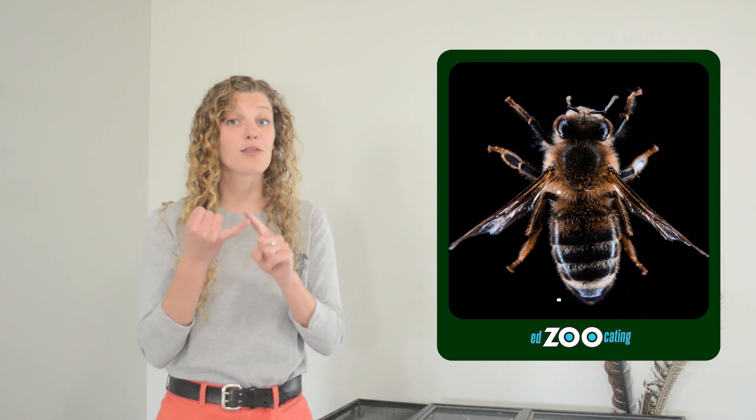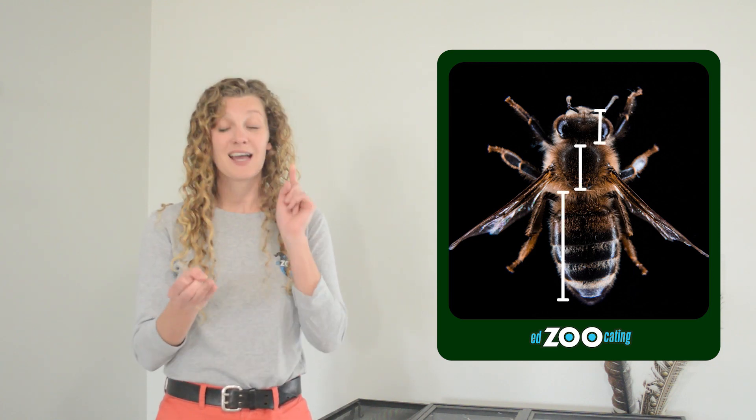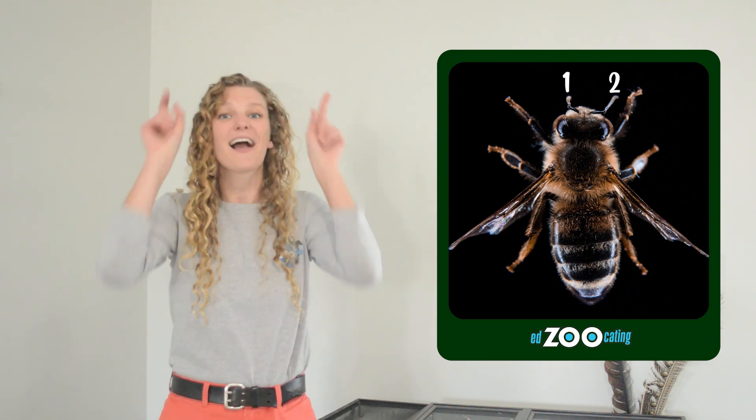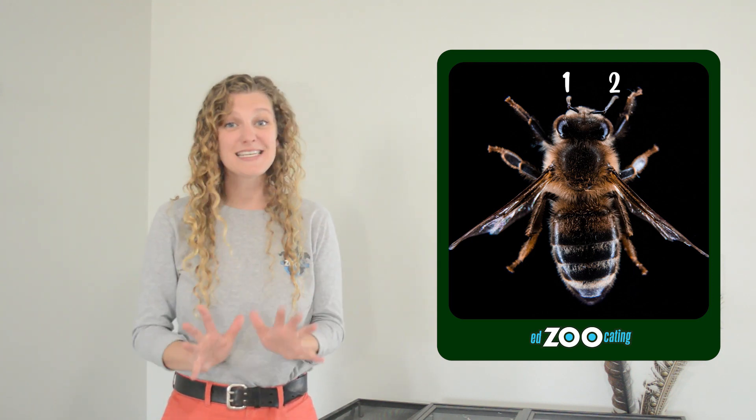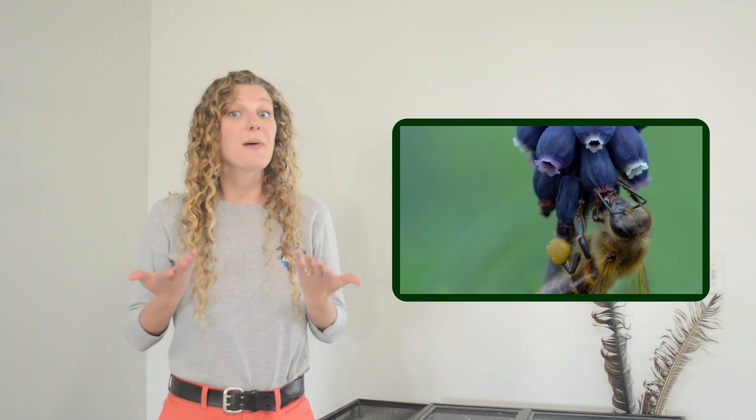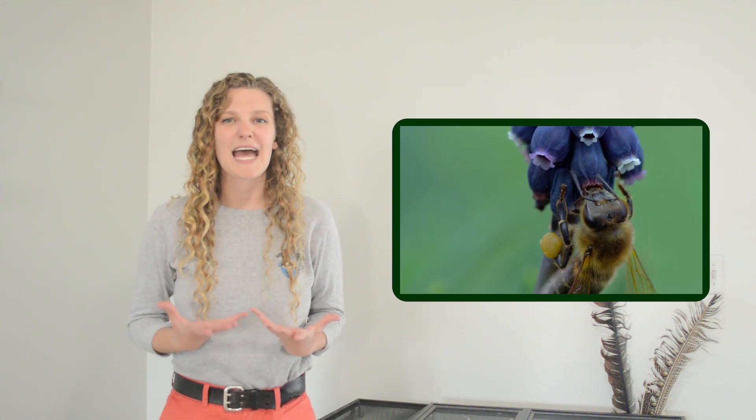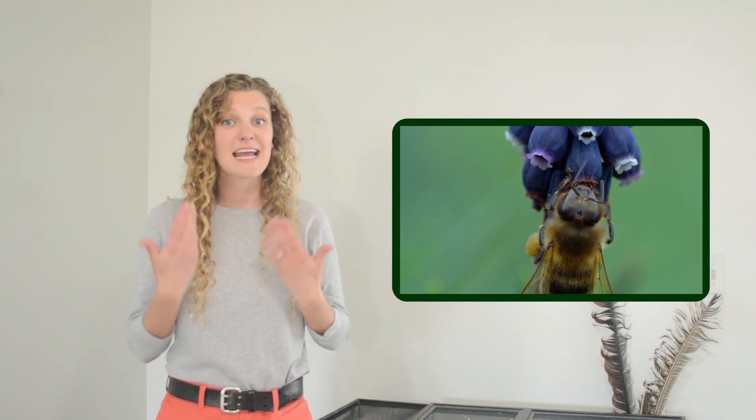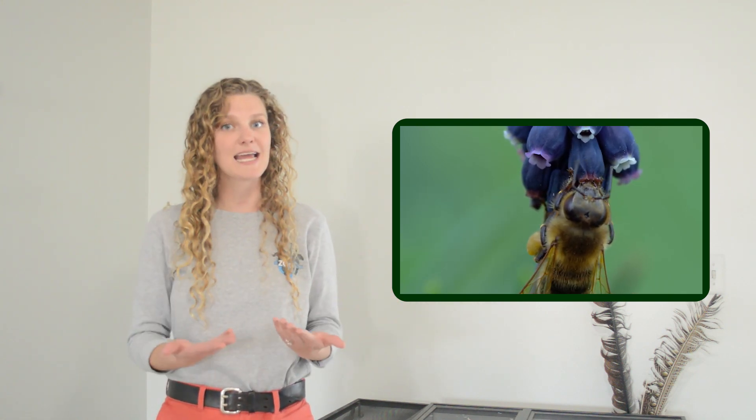Bees are insects and all insects have three body segments, six legs, and two antennae on their head, and those antennae are very important. Insects like bees use them to feel around in their environment, but they also use them to detect chemicals, which is just a fancy way of saying they use their antennae to smell or taste.